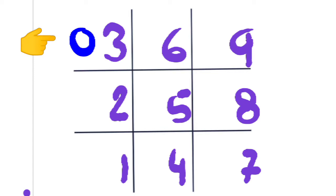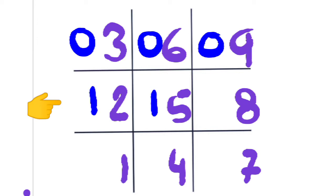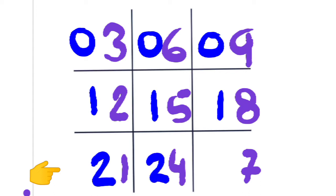Now in the first row write 0 in the tens place. In second row write 1, and in third row write 2.